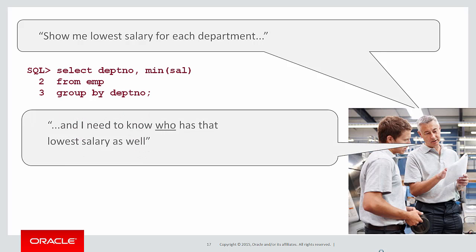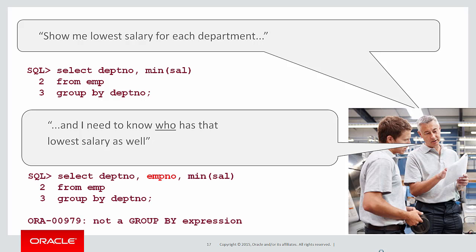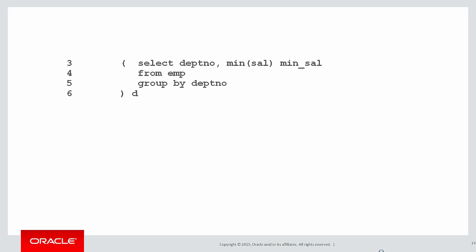However, another requirement might come along saying, I need to know who has that lowest salary as well. Now that's a bit more of a tricky proposition. If I just add the employee number into my SELECT clause, I'll get an error that it's not a GROUP BY expression. To fix that, I might choose to add the employee number into the GROUP BY, but that impacts the aggregate — the minimum salary is no longer by department, it's by each employee within each department, and that's not the answer we want.